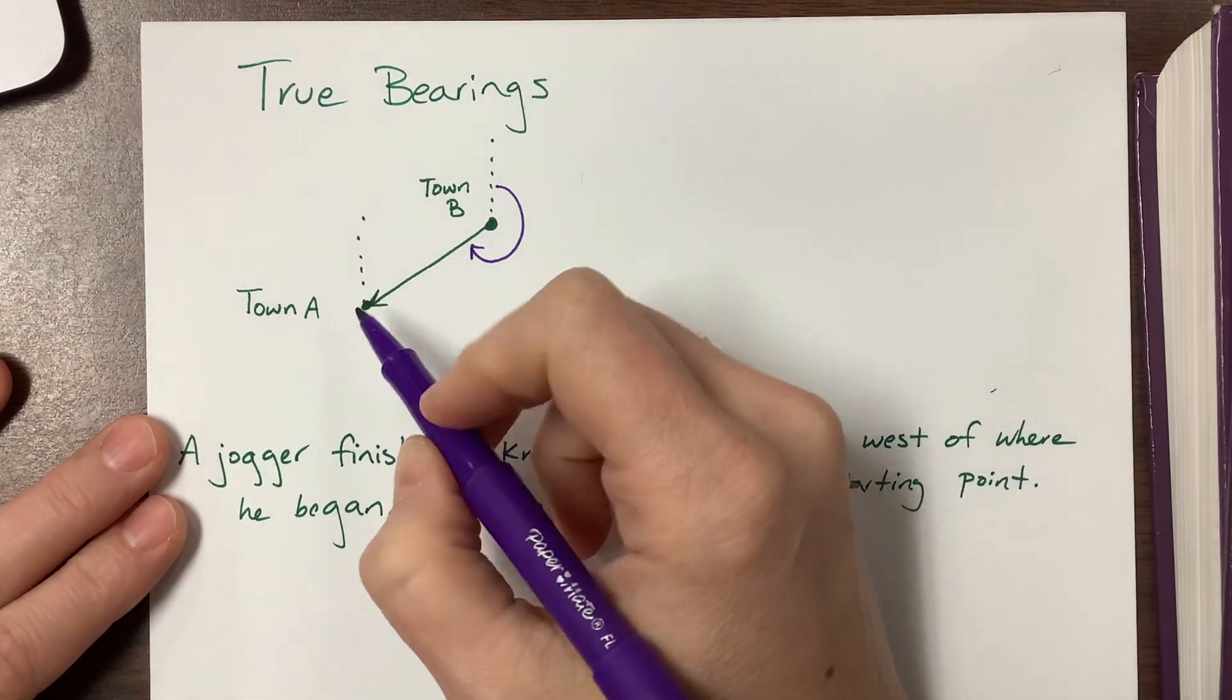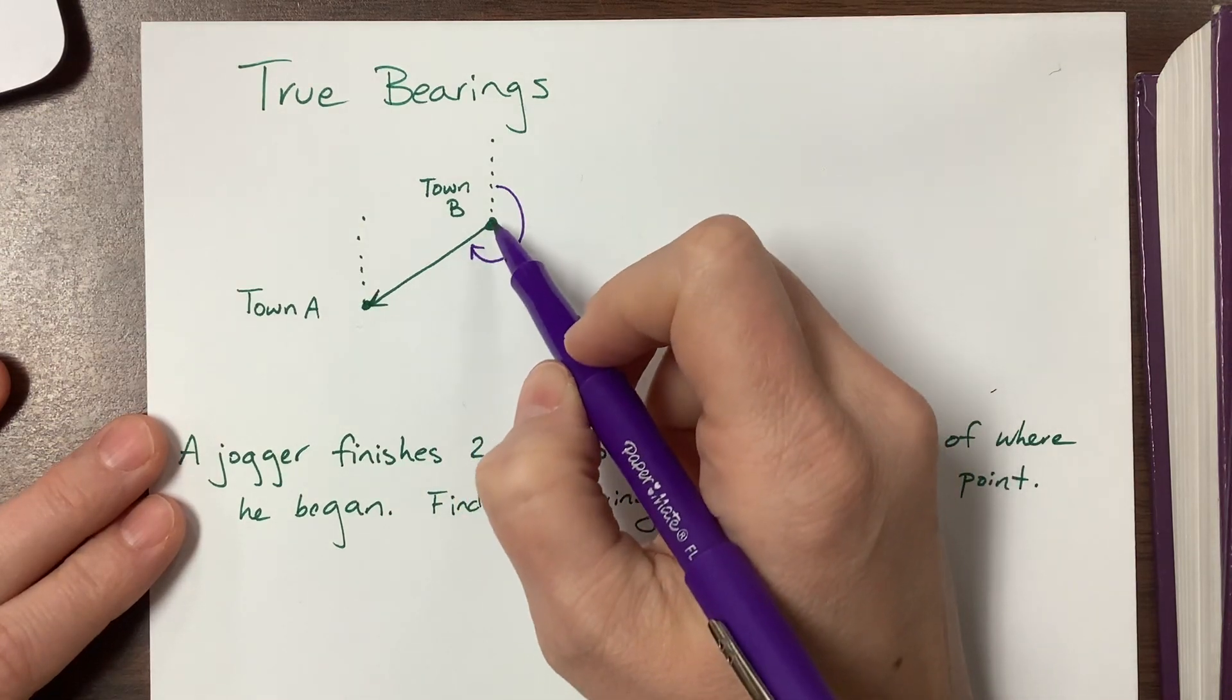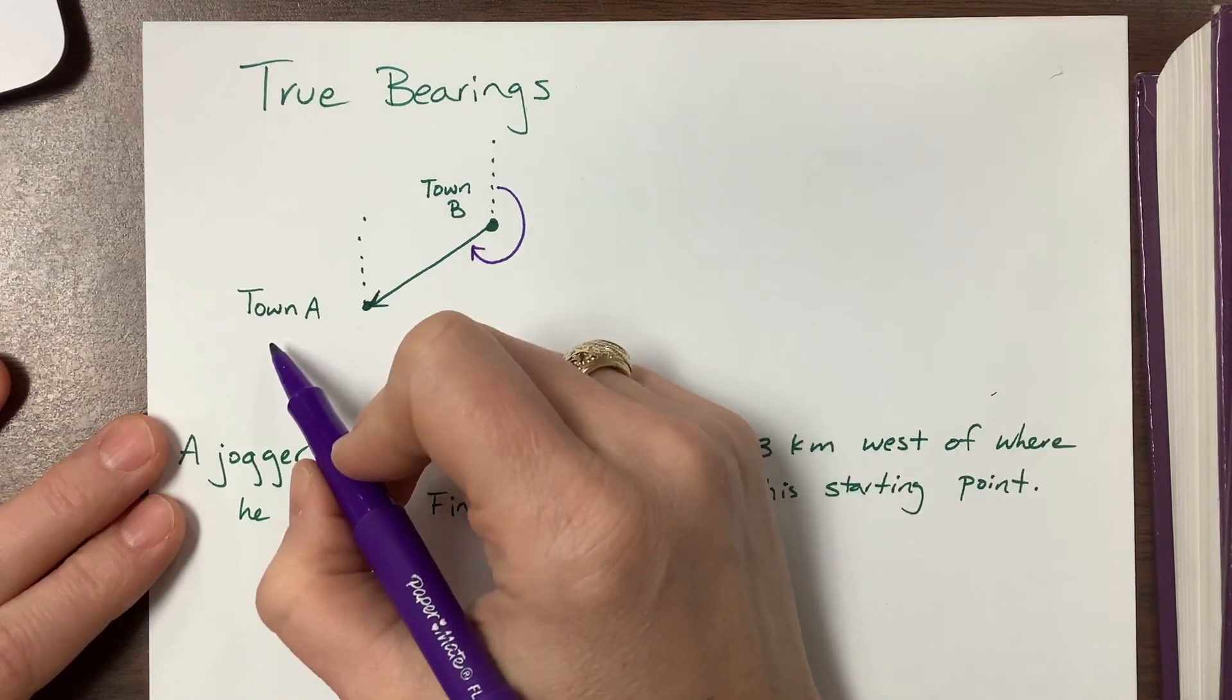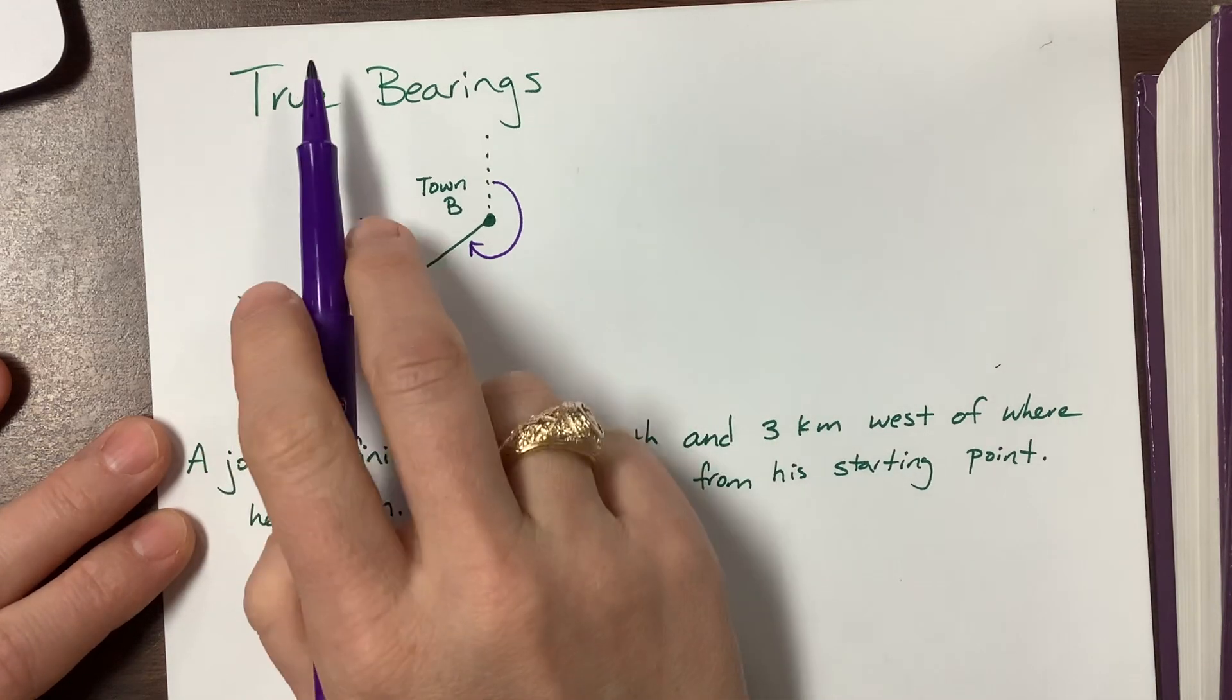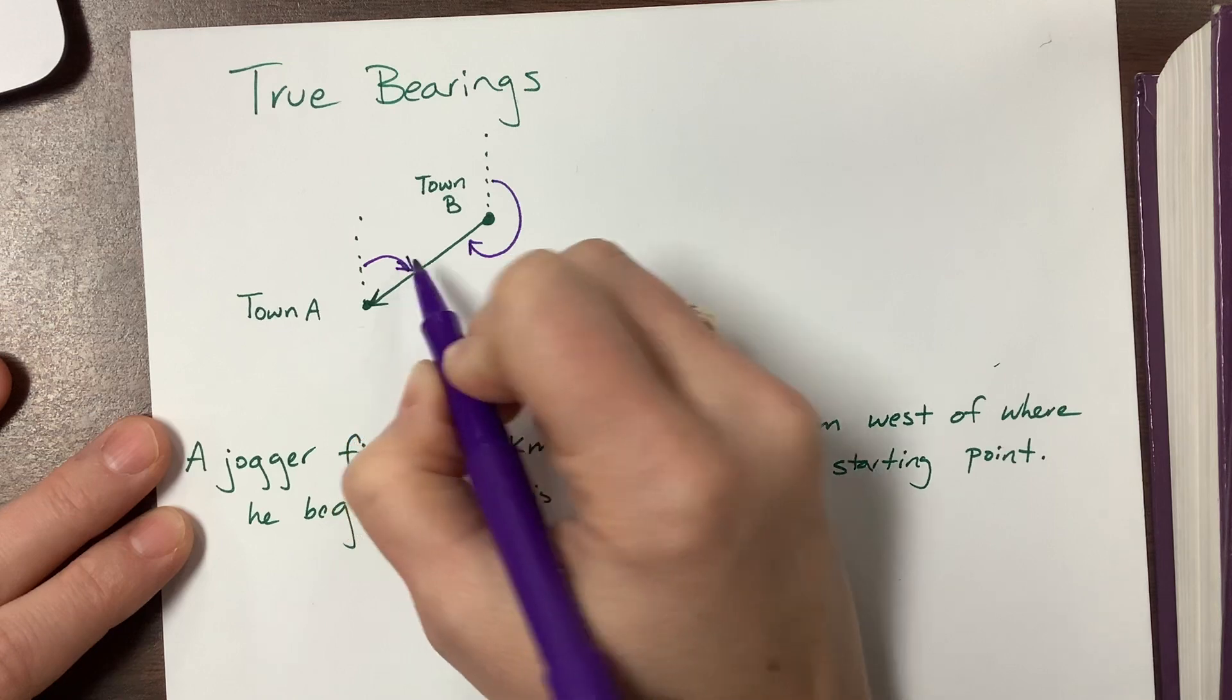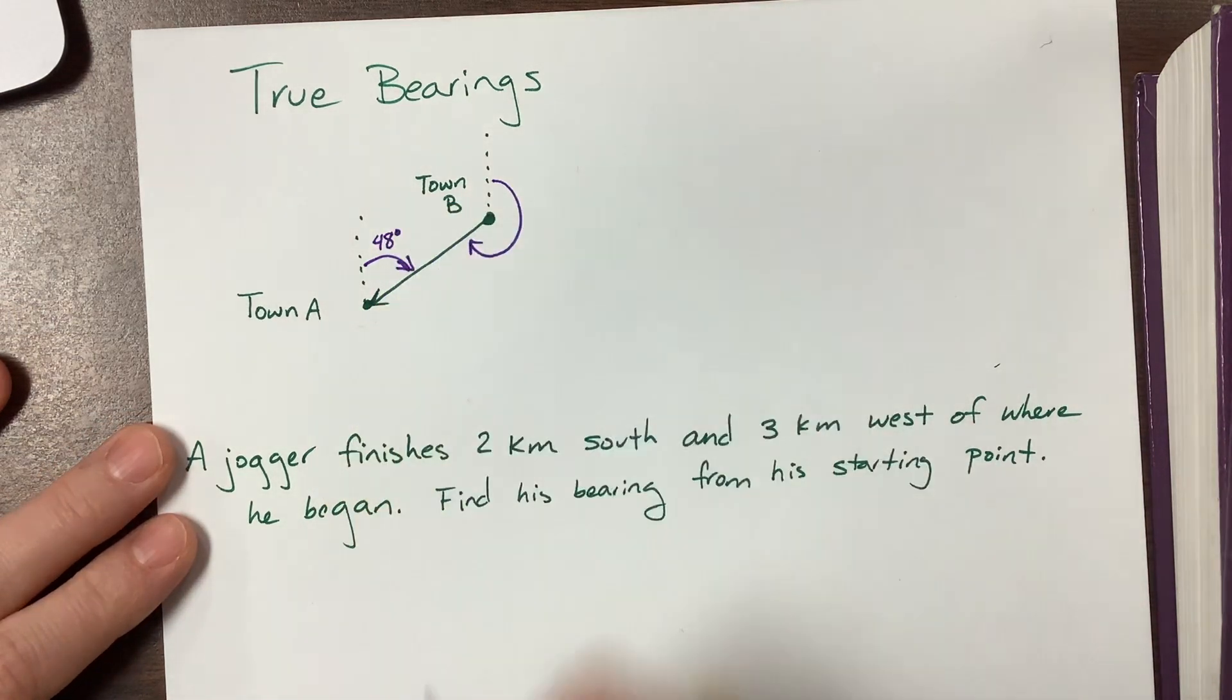That's how this would be the angle that we find - the bearing from town B to town A. They could also say what's the bearing from town A to town B, and that's if you were going true north and then you turn to figure out that angle right here. So let's say the example that the book gives us is they say that this is 48 degrees.